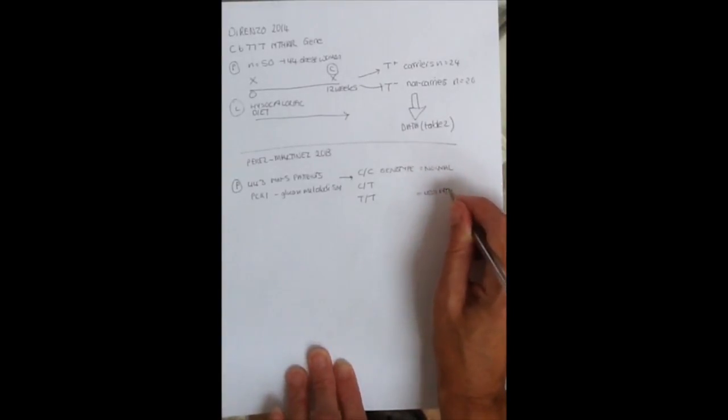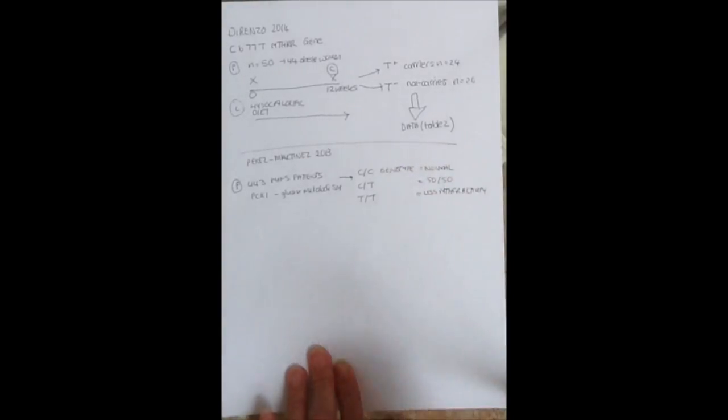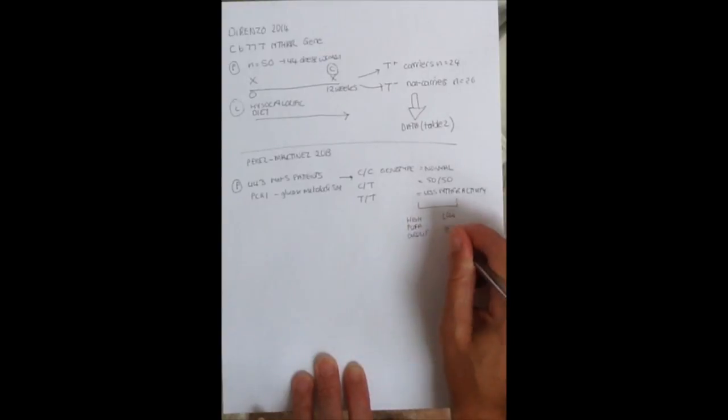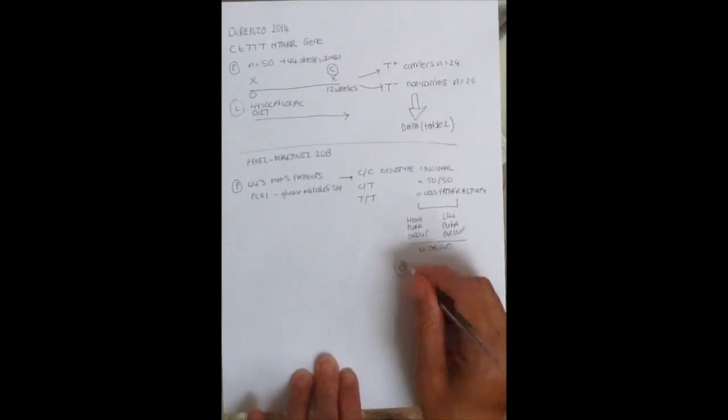So again, they're genotyping normal patients: CC, those with the CT genotype, and those with the TT, who are going to be the potentially responsive ones. It's a similar principle to above. Then they subdivide again into patients with high lipids in the blood and low lipids in the blood.